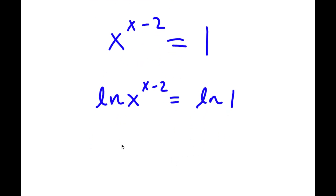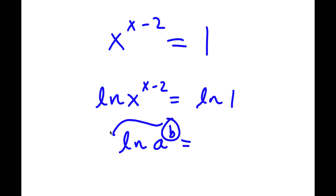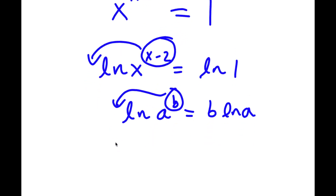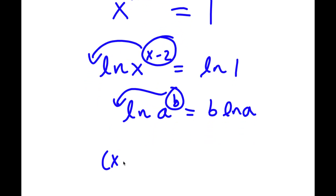Now, if I have something in the form ln of a to the power of b, I can move the exponent b to the front, so this equals b times ln a. So for ln of x to the power of x minus 2, I can move x minus 2 to the front, giving x minus 2 times ln x, which equals ln 1.